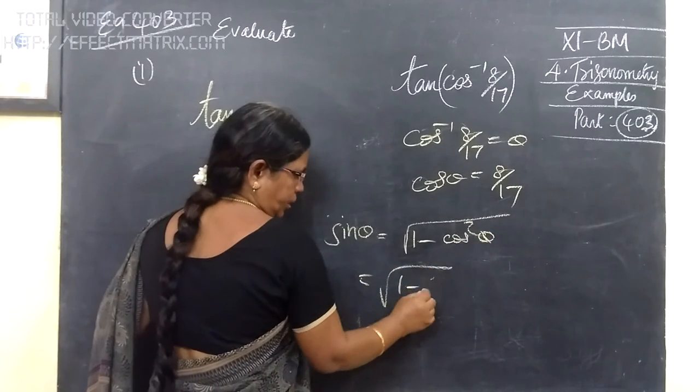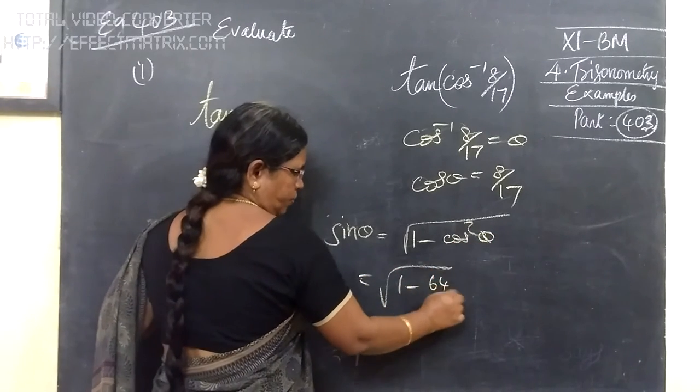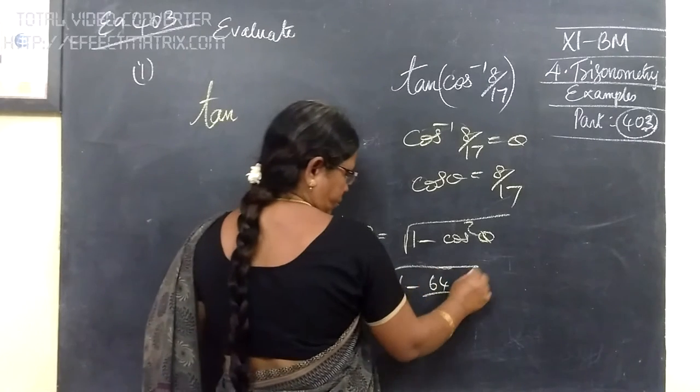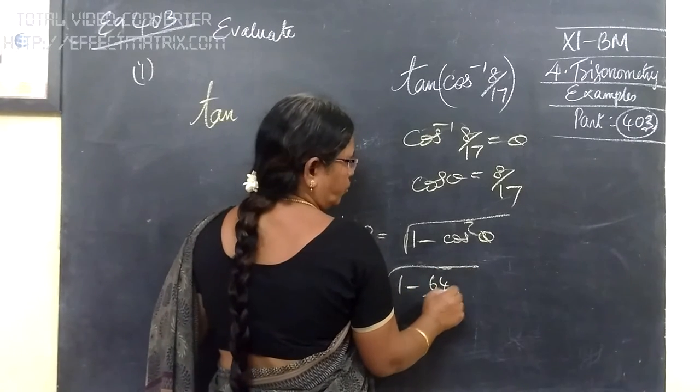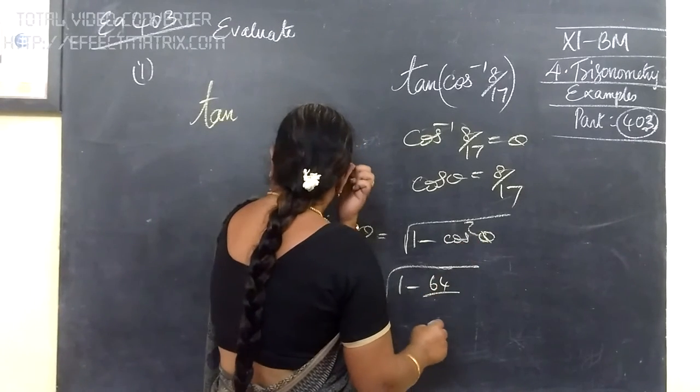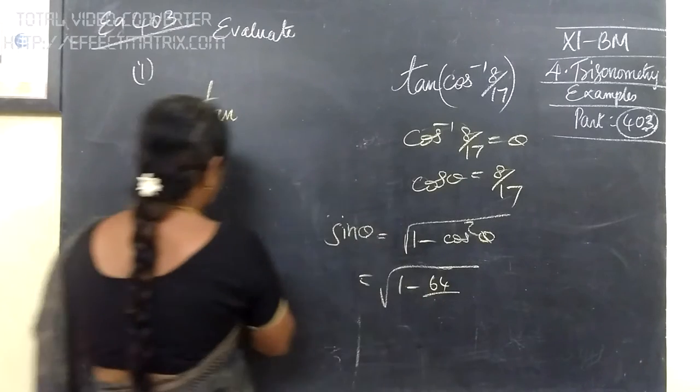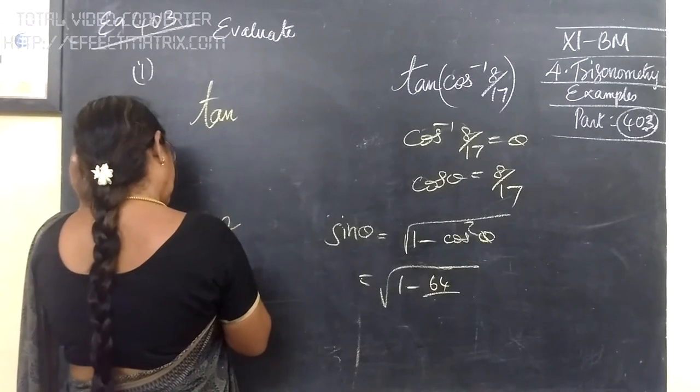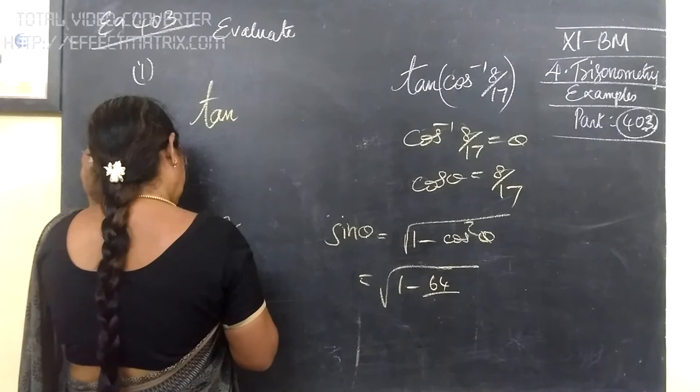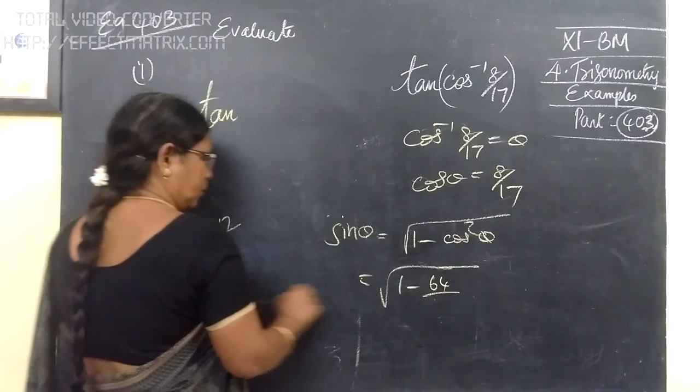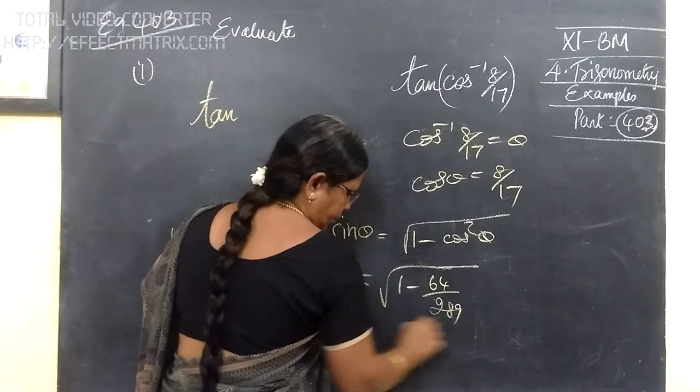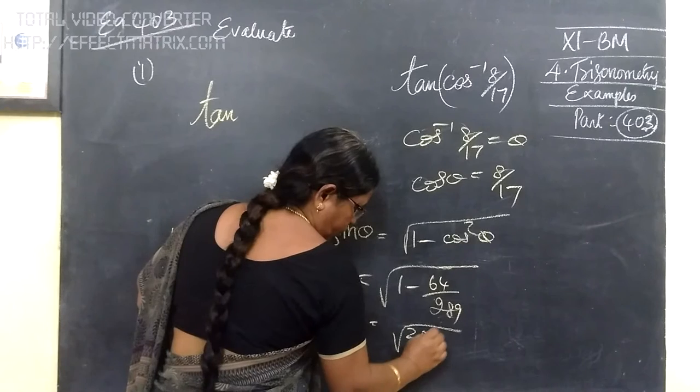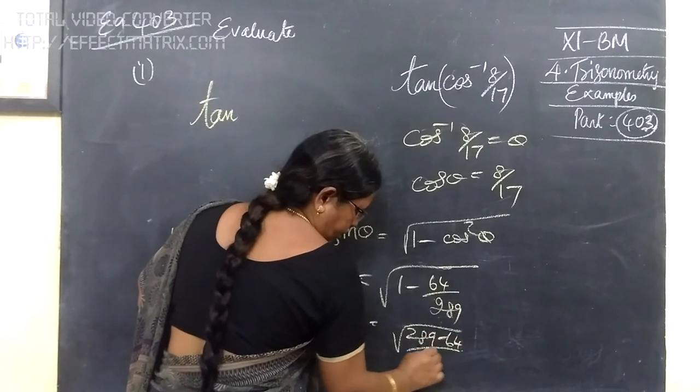So, equal to root of 1 minus 64 by 17 squared. Then 17 and 17. 225. Another one, 289.